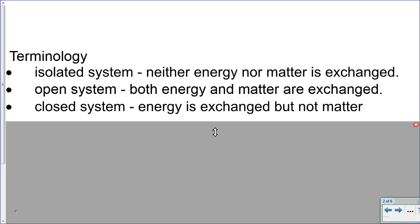A little bit of terminology — terms you would have seen before: isolated system, open system, closed system. These all refer to the movement and exchange of energy and matter. In an isolated system, neither energy nor matter enters or leaves. In an open system, both energy and matter are being exchanged — ecosystems and biomes are great examples. In a closed system, energy can enter and leave but matter cannot, and the classic example is the earth.